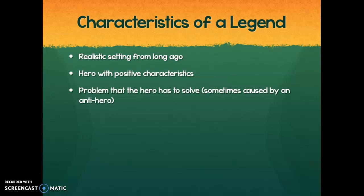Legends also have a problem that the hero of the story has to solve. They have to figure out a way to deal with whatever the problem is, and then come up with a plan to overcome it. Sometimes that problem can be caused by or made worse by what's called an anti-hero. An anti-hero is kind of like a villain, but it doesn't necessarily have to be what you'd consider a bad guy — it's just a person, place, or thing that stands in the way of the hero solving the problem and makes the hero's life a little more difficult.